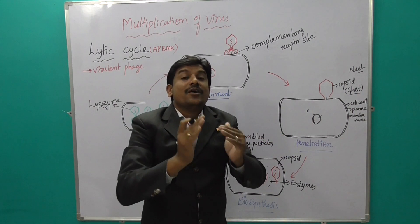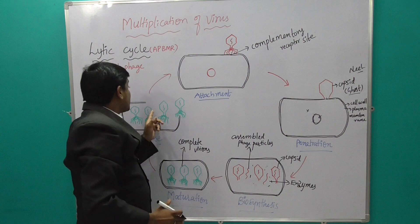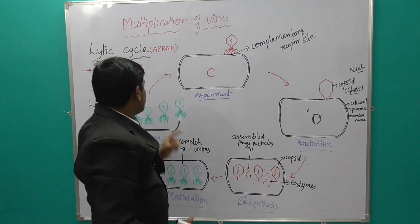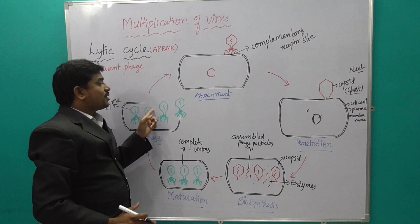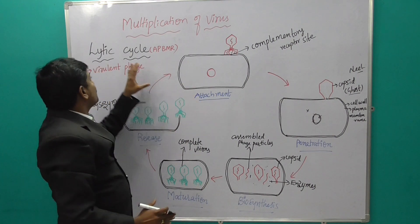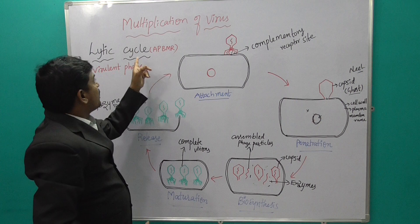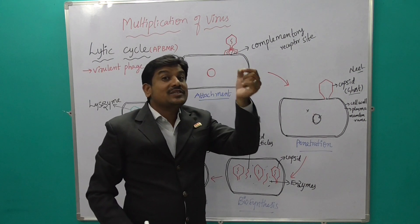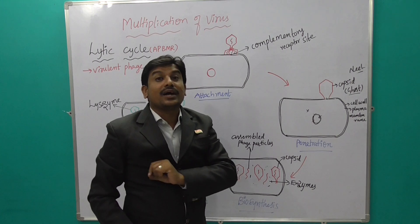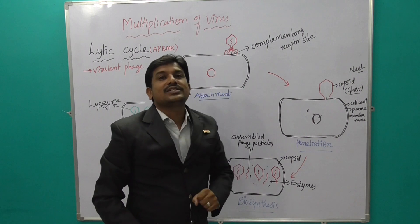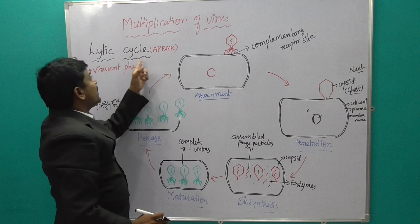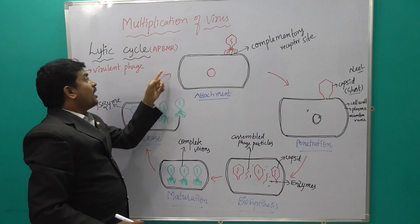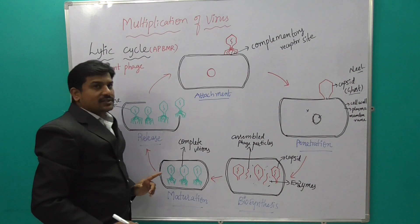With the help of lysozyme enzyme, the bacterial cell wall is ruptured and the bacteriophages are released outside. A large number of bacteriophages are released. The number of bacteriophages released per bacterium is called the burst size. This entire process — where bacteriophages attack E. coli bacteria and cause lysis of the cell — is called the lytic cycle, involving five stages: APBMR.